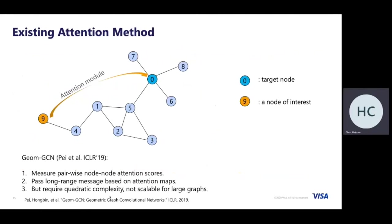There are some existing attention mechanisms that can handle non-local messages in the graph. For example, in geometric GCN, it measures pairwise node attention scores, and using this attention mechanism we can pass long-range messages based on the attention map. However, since it requires measuring pairwise attention scores, it requires quadratic complexity, which is not scalable for large-scale graphs.